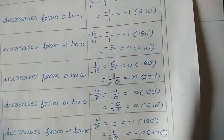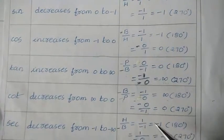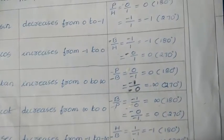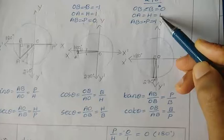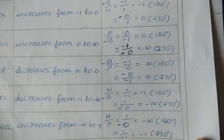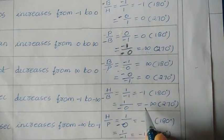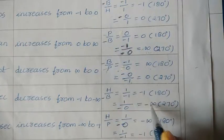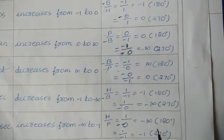Next, sec is hypotenuse upon base. Hypotenuse is 1 and base is minus 1, so 1 upon minus 1 equals minus 1. For 270 degrees, hypotenuse is 1 and base is 0, so 1 upon 0 equals infinity. Since the base is negative, we must consider minus infinity. So sec value decreases from minus 1 to minus infinity.